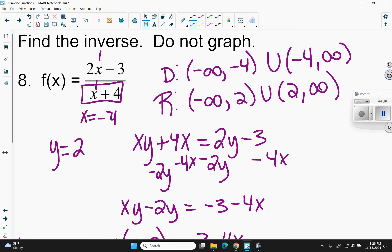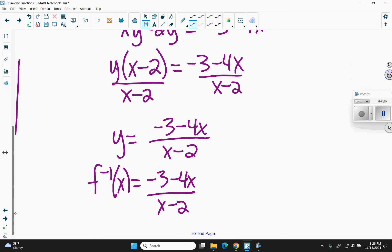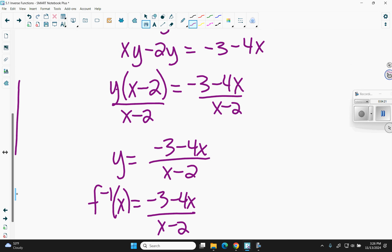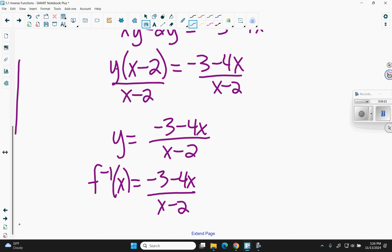What should happen is the domain and range of the inverse should be the flip of that. And so look at what I can't have in the x now. I can't have 2. So now my domain is negative infinity to 2, union 2 to infinity.